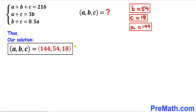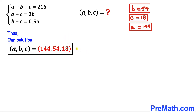So after all the calculations and manipulations, our solution is: a equals 144, b equals 54, and c equals 18. And that's our final answer.